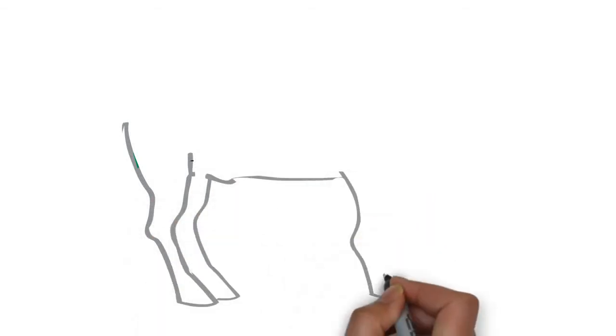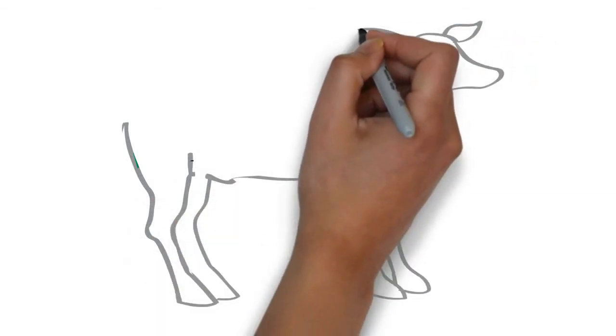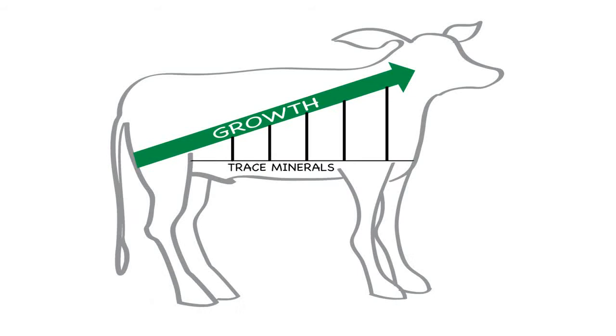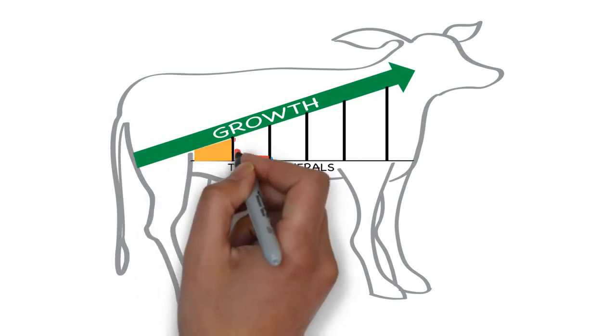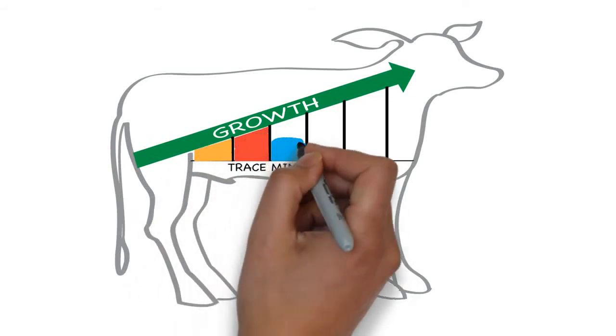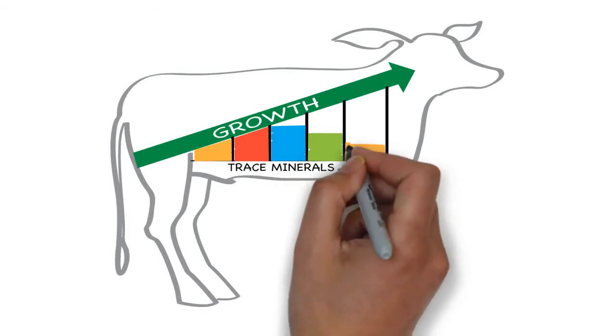However, the rapid growth rate that new calves experience during the first few weeks after birth, and the fact that cow's milk is a poor source of trace minerals, can quickly deplete their trace mineral levels, leaving them susceptible to scours and pneumonia.